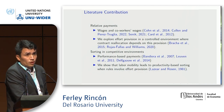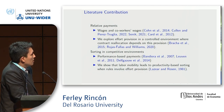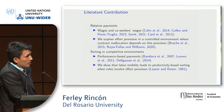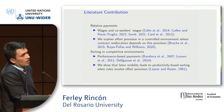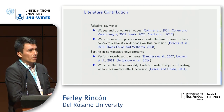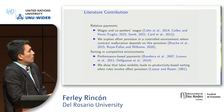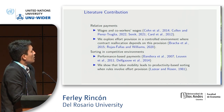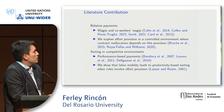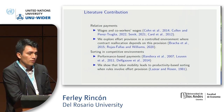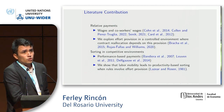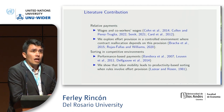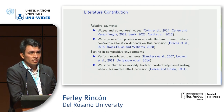We contribute to the literature about relative payment and sorting in competitive environments. The main finding in this literature is that workers' effort provision depends on wages, but also on the information that workers have about their co-workers' wages. We explore effort provision in a controlled environment where contract reallocation depends on this provision. In other words, in this work we try to understand how the rule for contract changing is affecting productivity.